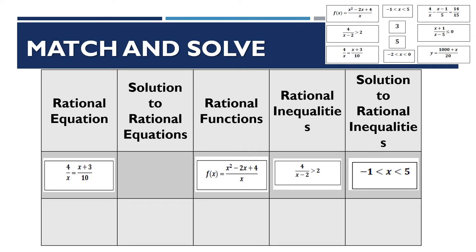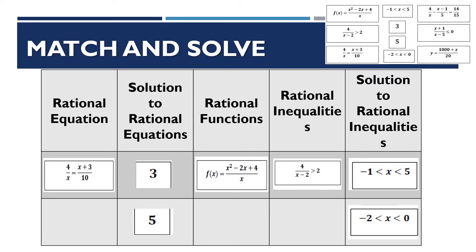The value 3 is a solution to a rational equation. Then −2 < x < 0 is also a solution, but a solution to rational inequality. Next, 4/x − (x − 1)/5 = 14/15 falls under column 1, which is a rational equation. And (x + 1)/(x − 5) ≤ 0 has an inequality symbol, so it falls under column 4, rational inequality.